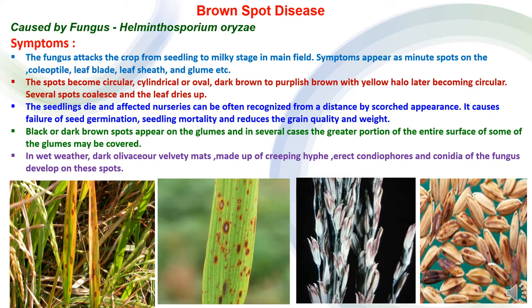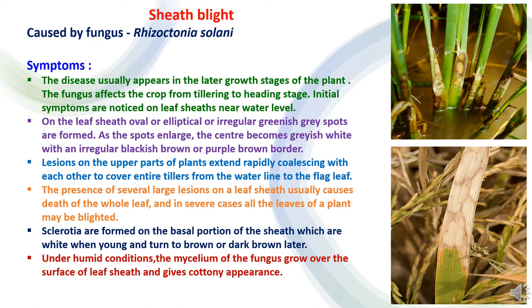Brown spot disease is caused by the fungus Helminthosporium oryzae. The fungus attacks the crop from seedling to milking stage. Minute spots appear on the coleoptile, leaf blade, leaf sheath, and glume parts. Spots vary in size and are circular, cylindrical, or oval in shape, dark brown to purplish-brown in color, with a yellowish halo in the middle. Several spots coalesce and the leaf tip dries up. The disease appears in the nursery also. Black-brown spots appear on glumes, and the disease impacts seed germination, causing seedling mortality and loss of quality and weight of grains.